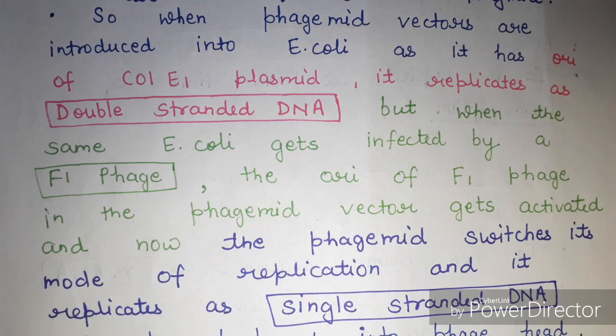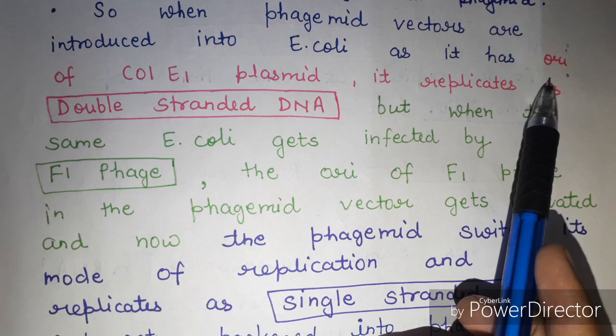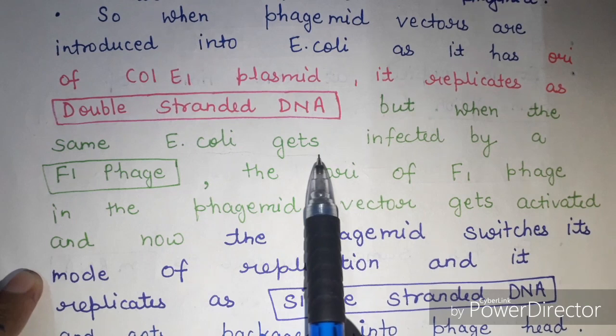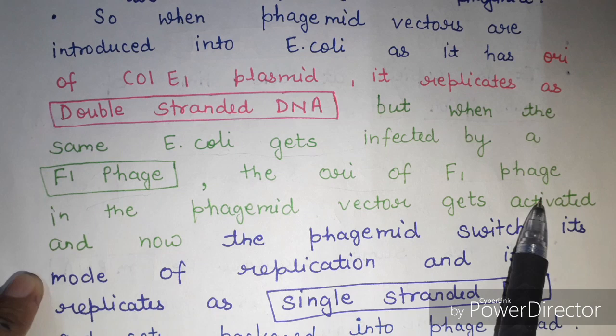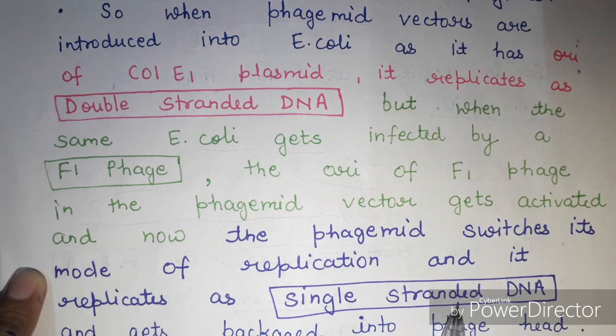When phagemid vectors are introduced into E. coli, because they contain the ColE1 plasmid origin of replication, they replicate as double-stranded DNA. However, when the same E. coli gets infected by an F1 phage, the F1 origin of replication present in the phagemid vector gets activated. The phagemid then switches its mode of replication and replicates as single-stranded DNA, which gets packaged into the phage head.